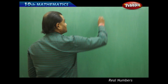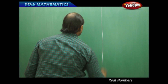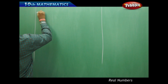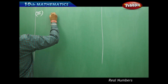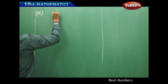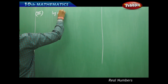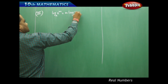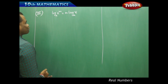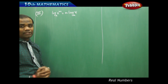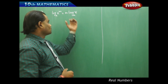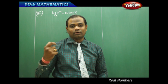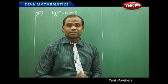Let's see the third law of logarithms. The third law says that log(x^m) to the base a equals m·log x to the base a. So the power inside the log comes out as a multiplier when it comes out of the logarithm. We are going to prove this as the third law of logarithms using the exponents.